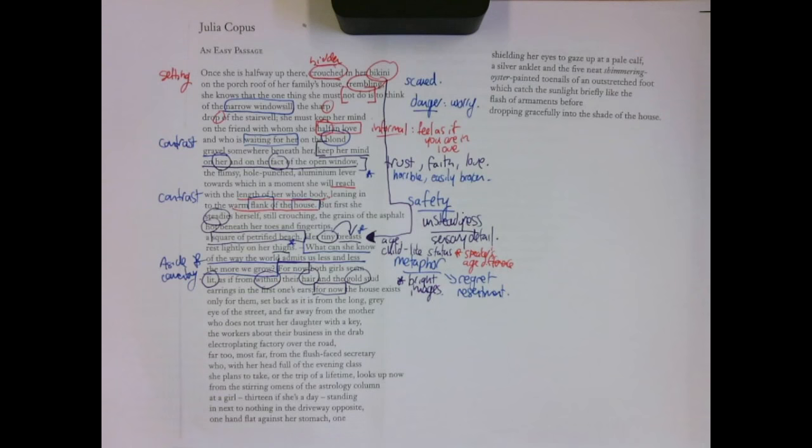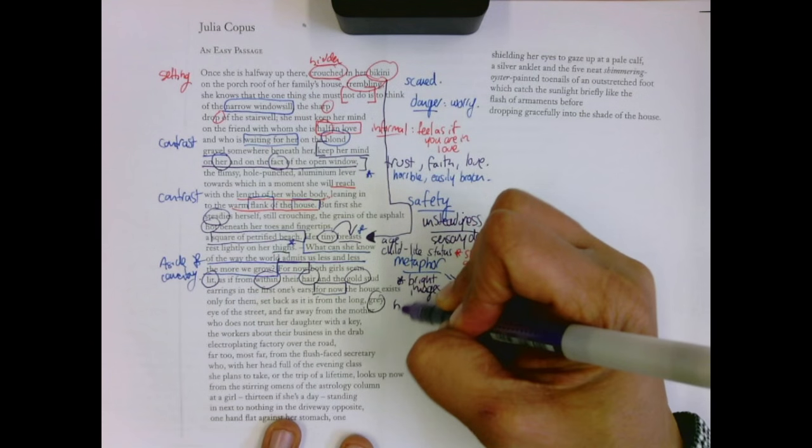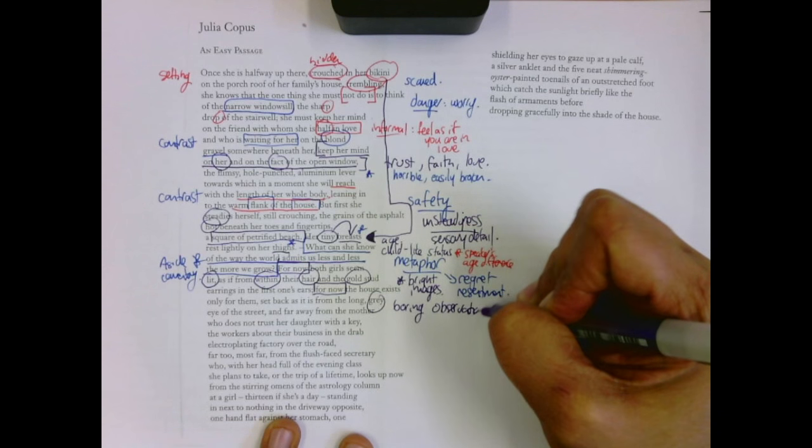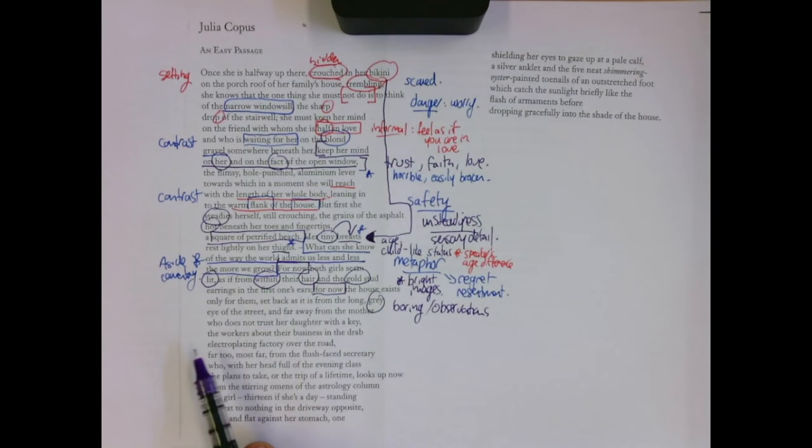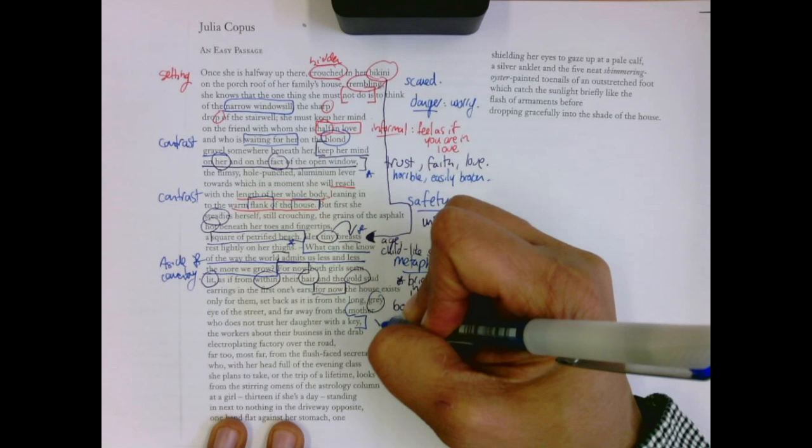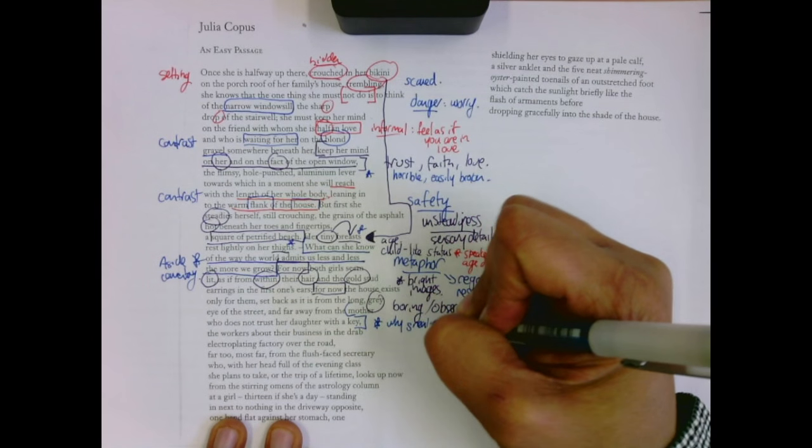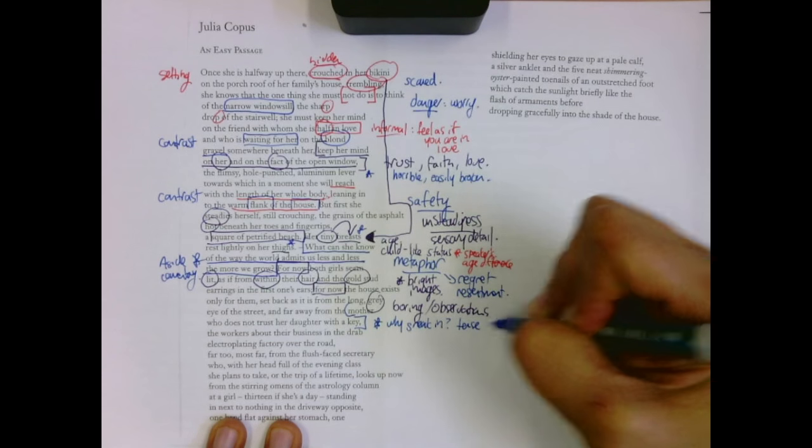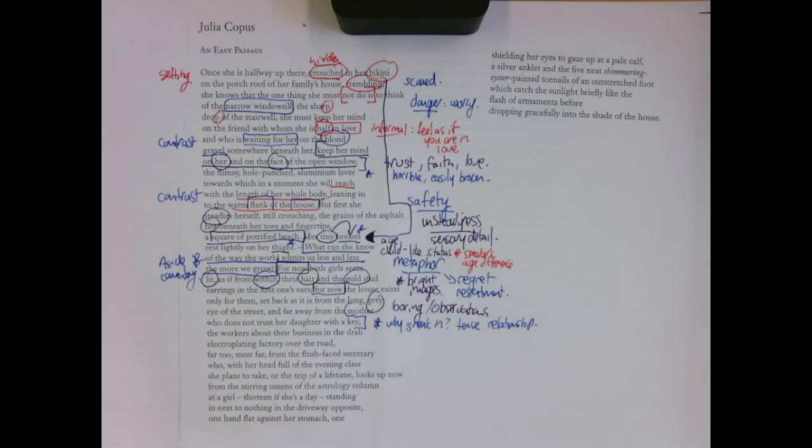For now, the house exists only for them set back as if from the long grey eye of the street. Now watch as the camera pans out. So this moment is so exciting, so important. It's just this moment. It's like when you're a kid and you're doing something naughty or you're doing something for the first time. All of our emotions are heightened. And we pull back. It's the grey eye of the street, the boring observations of other people. And far away from the mother who does not trust her daughter with a key. And here we get that detail. Why sneak in? Tense relationship.